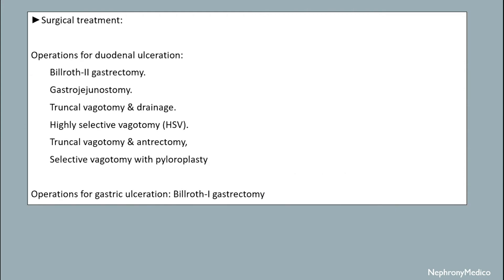Surgical treatment includes operations for duodenal ulceration such as Billroth-2 gastrectomy, gastrojejunostomy, truncal vagotomy and drainage, highly selective vagotomy, truncal vagotomy and antrectomy, and highly selective vagotomy with pyloroplasty. Operations for gastric ulceration include Billroth-1 gastrectomy.